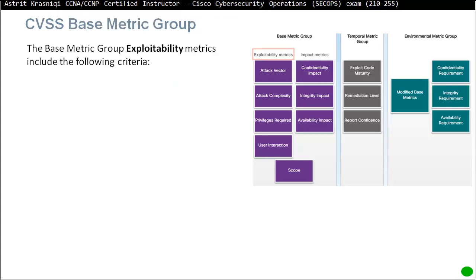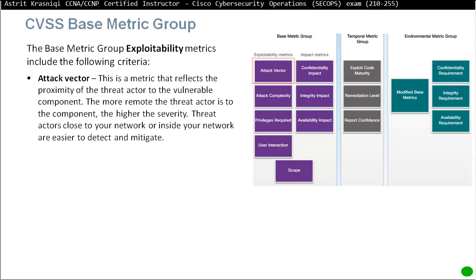Looking at the exploitability metrics, the exam really focuses on the base metric group. First we have attack vector. This is the metric that reflects the proximity of the threat actor to the vulnerable component. The more remote the threat actor is from the component, the higher the severity. Threat actors close to your network or inside your network are easier to detect and mitigate.